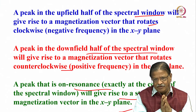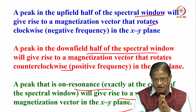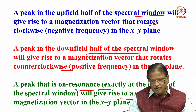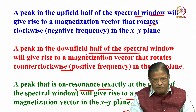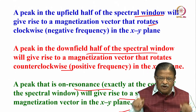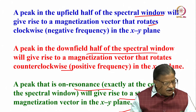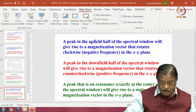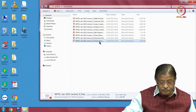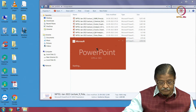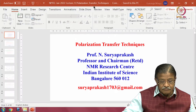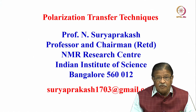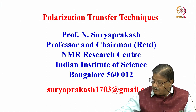The take-home message is: if the pulse frequency is not exactly at the Larmor frequency (off-resonance), the magnetization vector rotates in the x-y plane, and the rate of rotation depends on how far the peak is from the carrier offset — farther peaks rotate faster. Now, with this understanding of chemical shift and J-coupling evolution, we will move to the next topic: polarization transfer — how we enhance signal intensity.